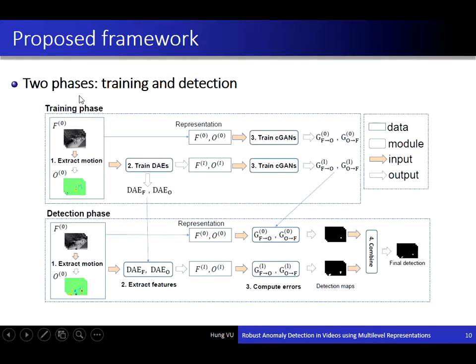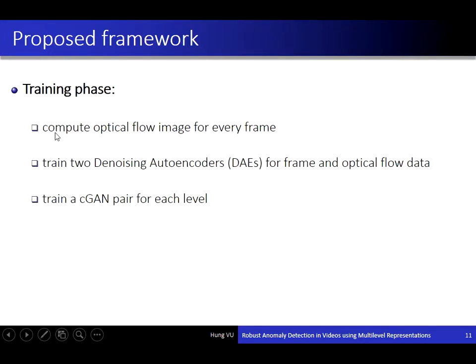Overall, our framework contains two phases: a training phase and a detection phase. For the training phase, we first compute the optical flow image for every frame, and we train two denoising autoencoders for frame data and optical flow data.